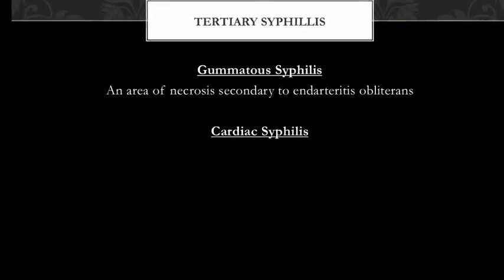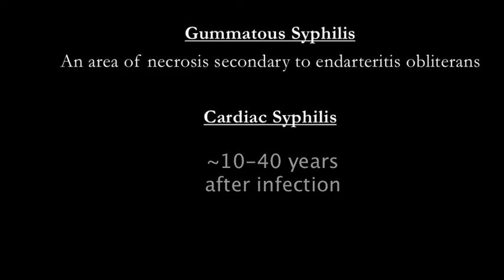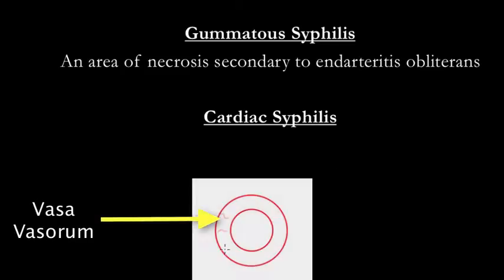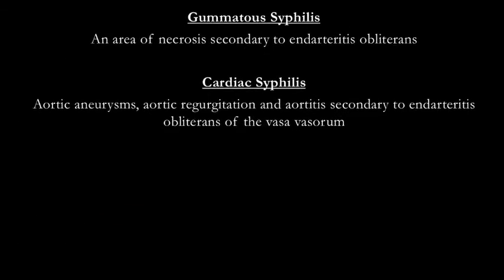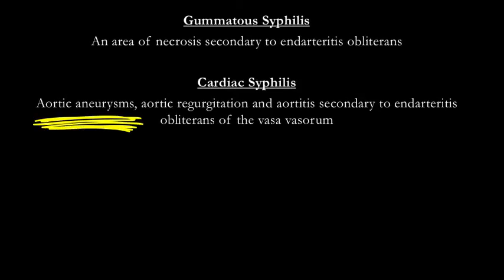Gummas commonly occur on the skin and skeletal system, but any organ including internal organs can be involved. Cardiac syphilis occurs in about 10% of people with late untreated syphilis, usually 10 to 40 years after primary infection. The vasa vasorum of large arteries like the aorta — the tiny blood vessel network providing nutrients to the media and adventitia — undergoes fibrosis, causing the muscular media to become atrophic and prone to aneurysm, resulting in aortic regurgitation and aortitis.